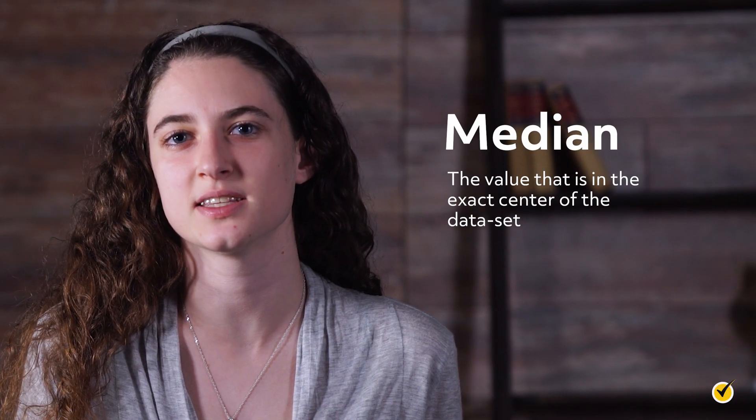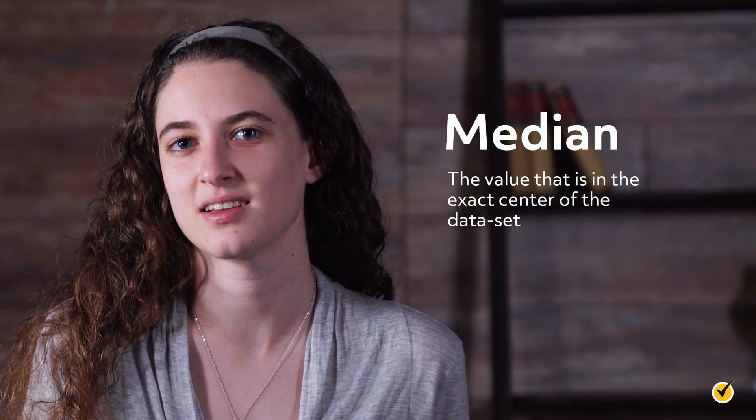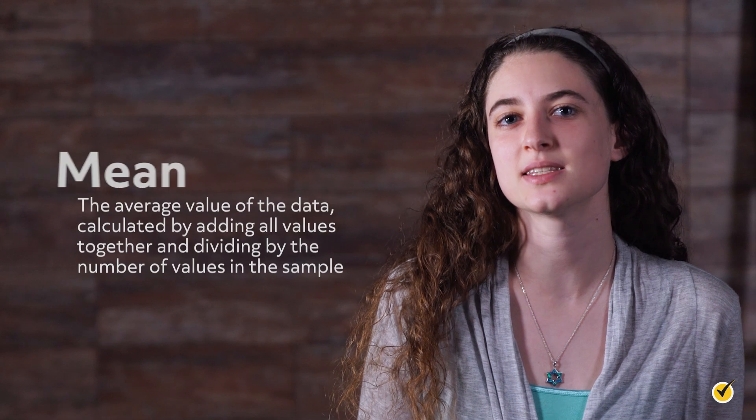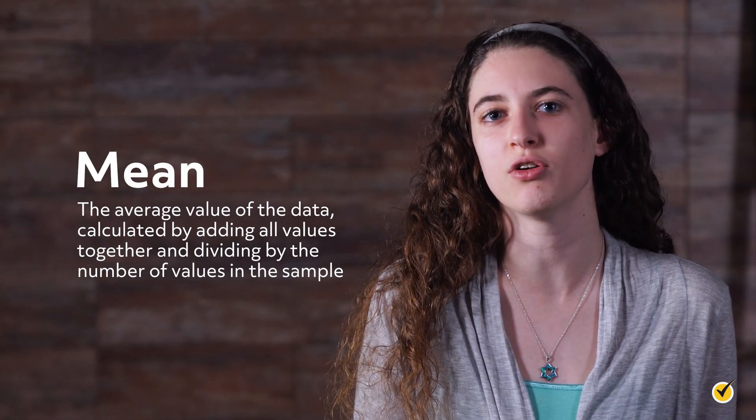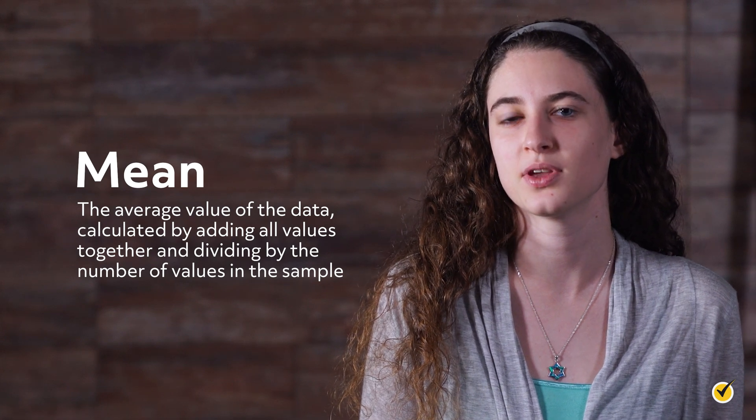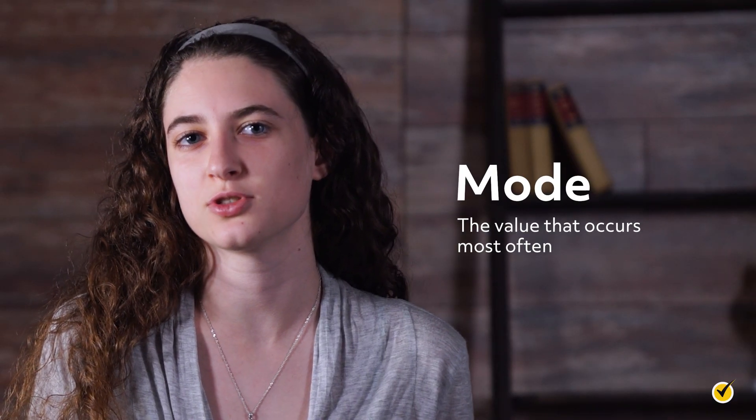The median is the value that is in the exact center of the dataset. 50% of the values are higher than the median, and 50% are lower. The mean is the average value of the data, calculated by adding all values together and dividing by the number of values in the sample. The mode is the value that occurs most often.